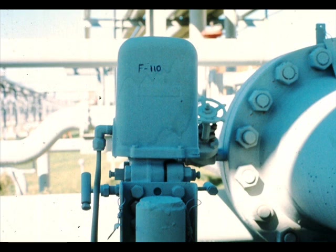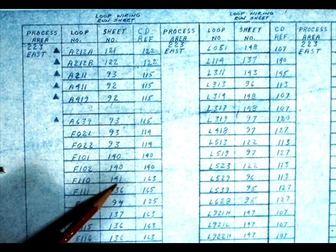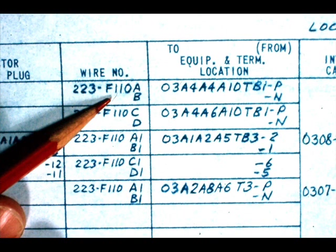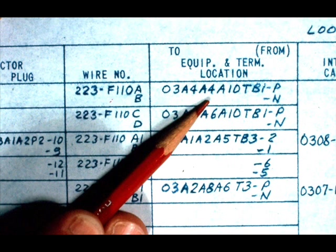Suppose you need to find the control center termination for flow transmitter F110 for this particular system. This point lists the various transmitters and gives control center wiring location for each. Locate F110 on the schedule. The location column shows it to terminate at location 03-A4-A4-A10-TB1. So, what does this mean?